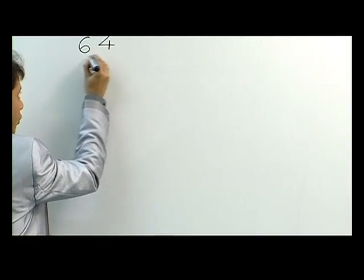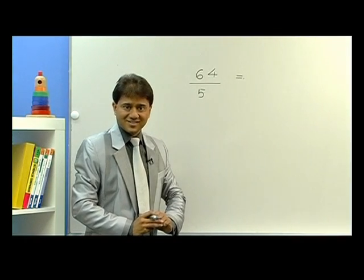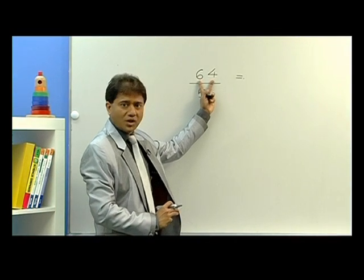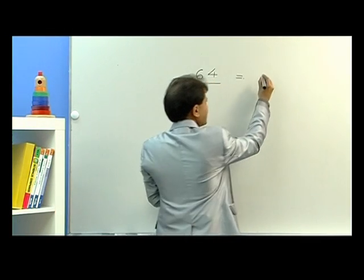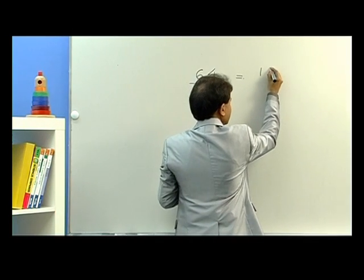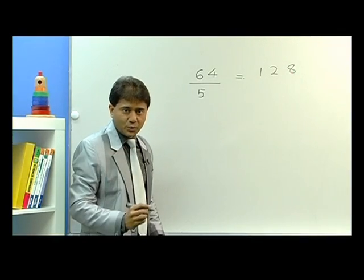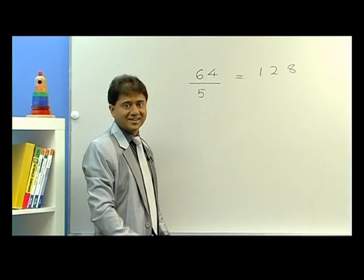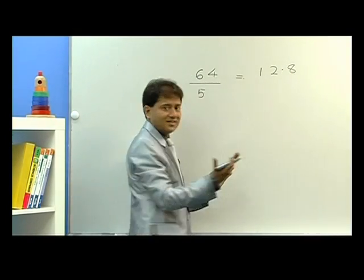And now I'm going to explain how to divide any number by 5. If you have to divide 64 by 5, all you have to do is just double it. What is double of 64? 128. So we write 128. Once we get this answer, we simply divide by 10. Dividing by 10 means just put a decimal point here, and that's the answer.